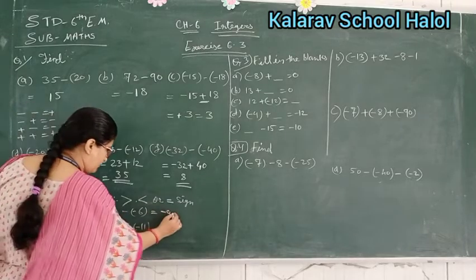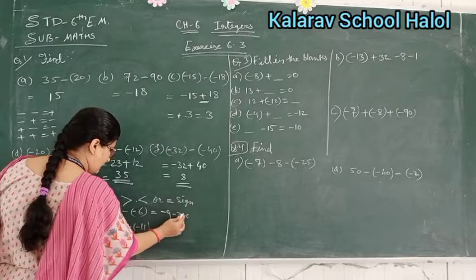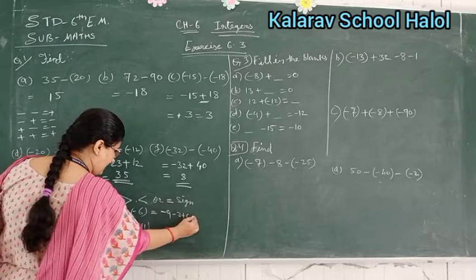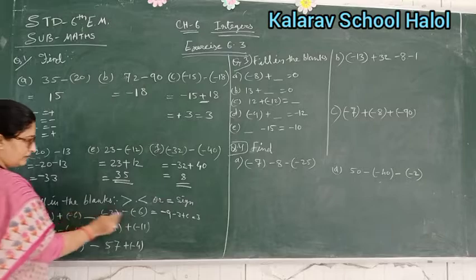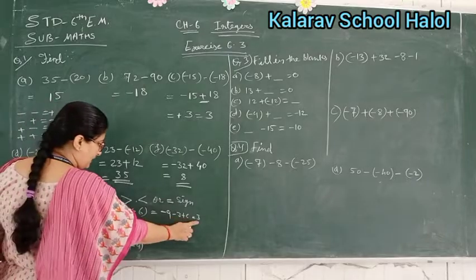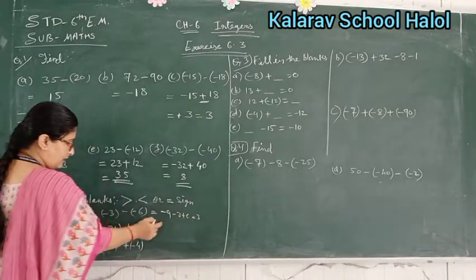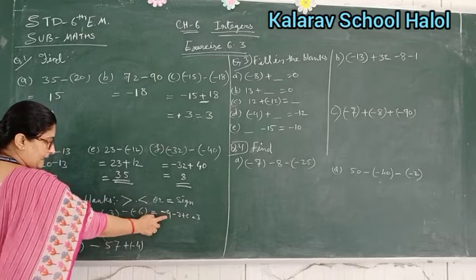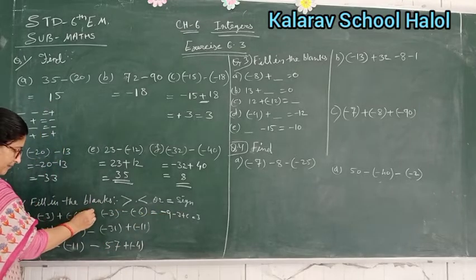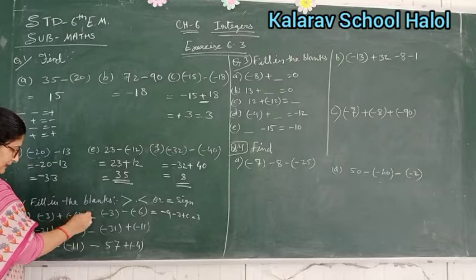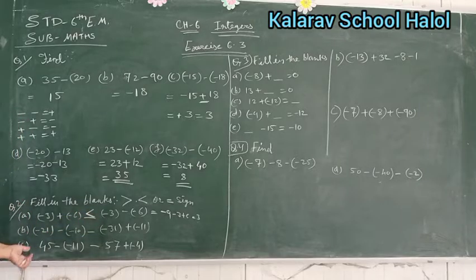Minus minus plus, so minus 3 plus 6 = 3. So this answer is 3 — positive 3. And the other side is negative 9. Positive 3 is greater than negative 9, so we use greater than here, and that side uses less than. Okay.